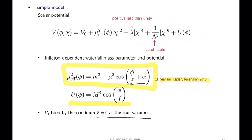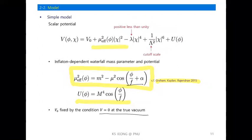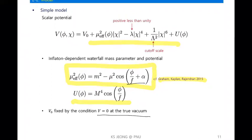The point is that we need a potential barrier along the waterfall direction, and any kind of potential will work. There are several mass parameters: small m is the waterfall mass parameter, μ determines the size of the axion–waterfall field interaction, λ is a dimensionless quartic coupling, Λ is the cutoff scale, and capital M determines the overall size of the axion potential. So there are four mass parameters and one dimensionless parameter in our model.